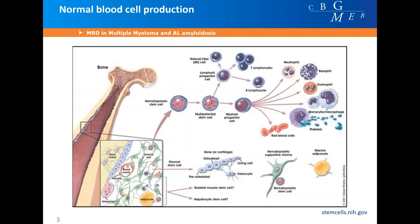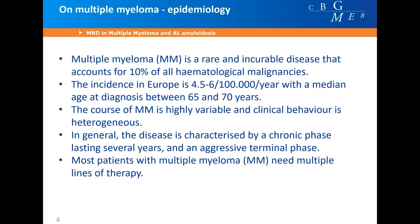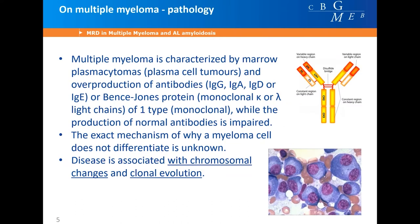Multiple myeloma is a rare and incurable disease that accounts for approximately 10 percent of all hematological malignancies. The incidence in Europe is four and a half to six per hundred thousand people per year, with a median age at diagnosis between 65 and 70 years. The course of multiple myeloma is highly variable and clinical behavior is heterogeneous. In general, the disease is characterized by a chronic phase lasting several years and an aggressive terminal phase.